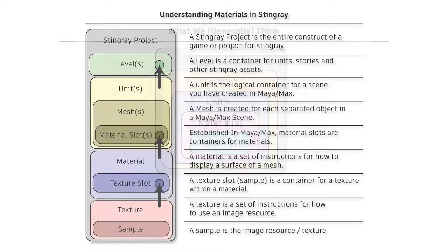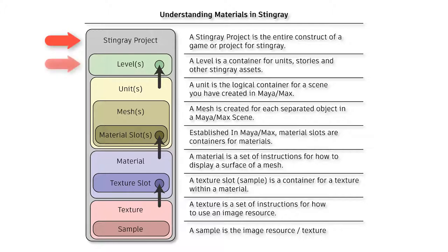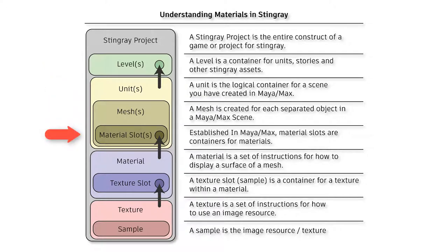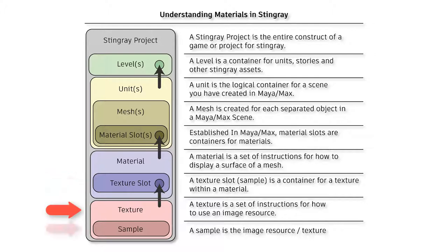This is actually how Stingray structures it. It's a little more complex, but you're going to notice that a lot of the things are the same — there are some in-betweens that allow us a lot of power. We have our Stingray project, our level or levels, our units, our meshes within our units. The mesh slots are basically containers that are going to hold our materials. The material has texture slots, and the textures go into those texture slots. And then our samples are what go into the textures.